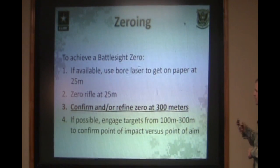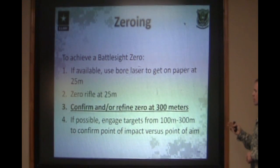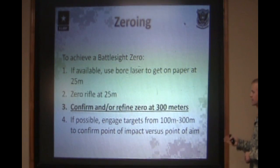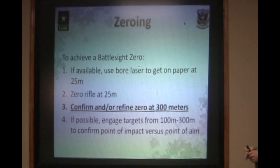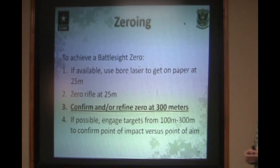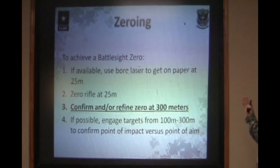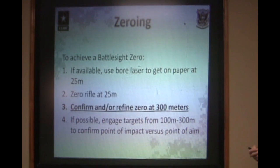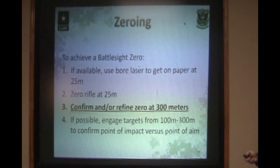If possible, you need to engage targets from 100 to 300 meters to ensure that zero is good — making sure nothing crazy is going on, that you're not out to the left or right, or too high or too low. If you shoot targets at each known distance from 100 to 300 meters, you can ensure that your zero is solid and you won't have any trouble with it.